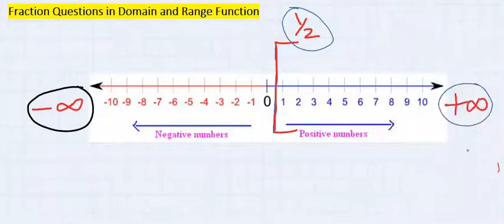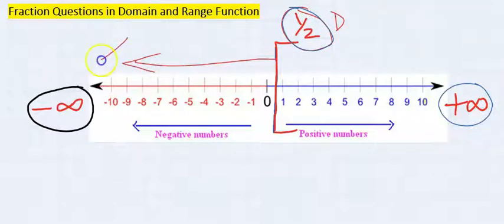You can see that the least value domain can take is 1 over 2. And x cannot take any value going towards negative infinity.